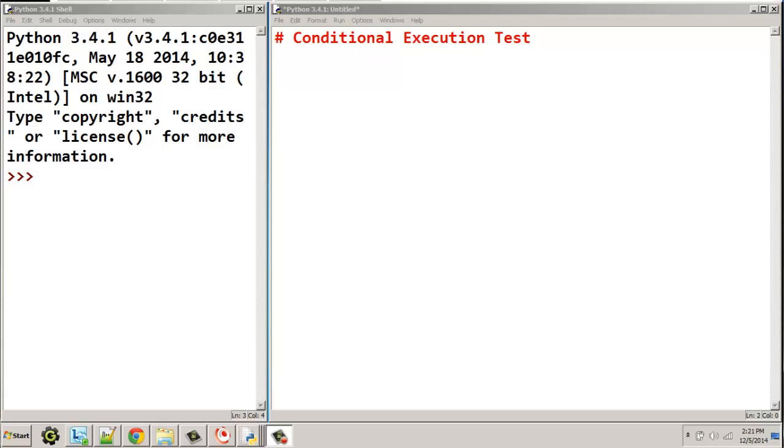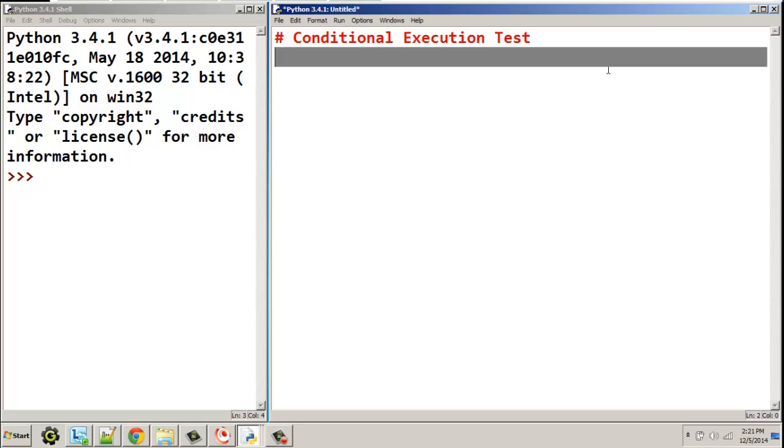Okay, we're talking Python version 3, and whenever you do programming, an essential part of programming is the idea of being able to have different possible outcomes, different paths that your program can take. In order to do that, we do what's called conditional execution. It is the classic if, else, then kind of situation.